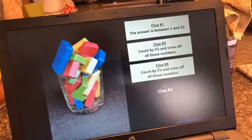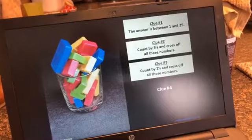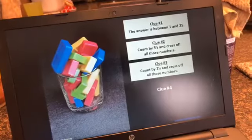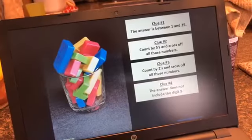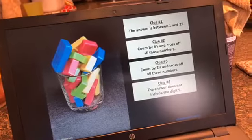Count by 2s and cross off all those numbers. And clue 4, the answer does not include the digit 9.